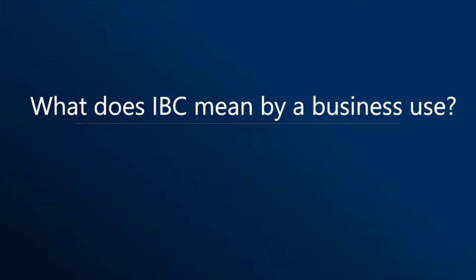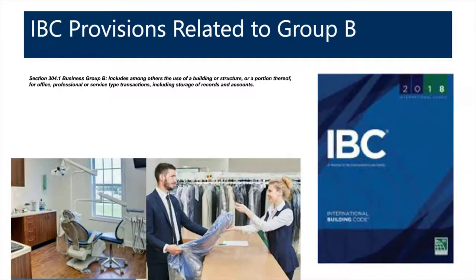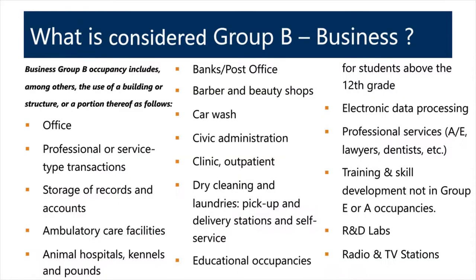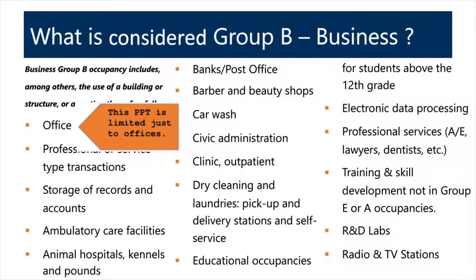The first topic is what a business use is. When IBC talks about business use, covered in Chapter 3, it includes office environments, professional or service transactions, storage of records and accounts — and everyday examples like picking up dry cleaning or going to the dentist. However, this presentation focuses specifically on the office environment subset of Group B business.